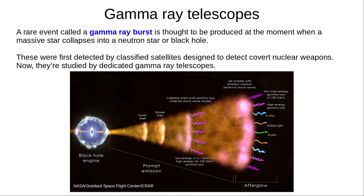Gamma rays are the most energetic part of the spectrum. A rare event called a gamma ray burst is thought to be produced at the moment when a massive star collapses into a neutron star or a black hole. These were first detected by accident by classified spy satellites designed to detect covert nuclear weapons. Now they're studied by dedicated space-based gamma ray telescopes.